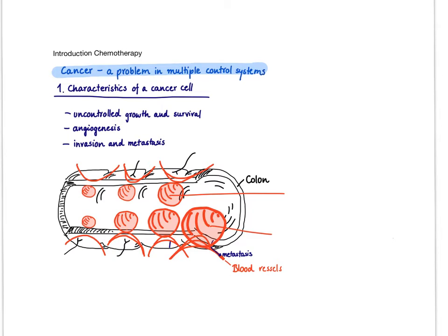The number one characteristic of a cancer cell is uncontrolled growth and survival. In normal cells, growth is under powerful control mechanisms — accelerating genes and brake genes. However, the key characteristic of a cancer cell is the uncontrolled growth.